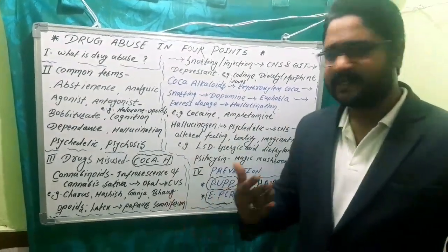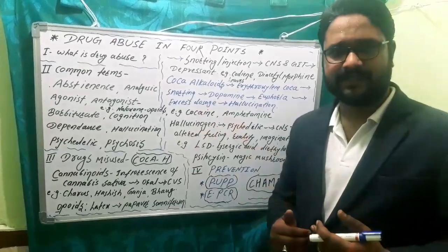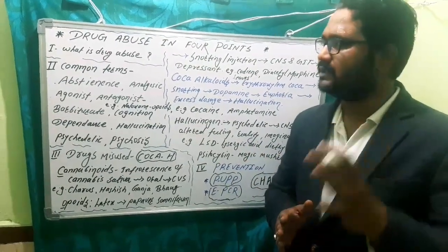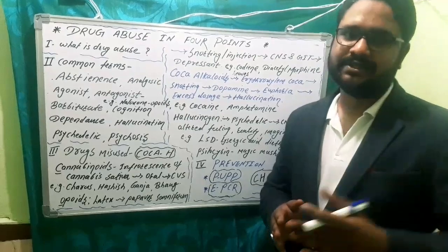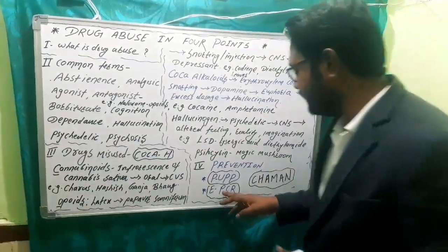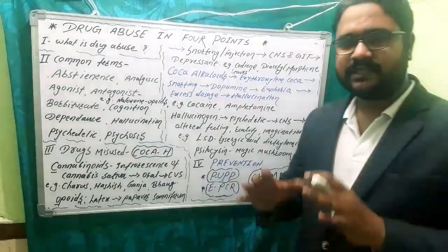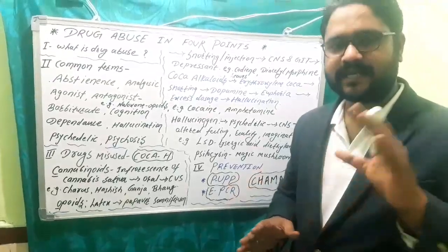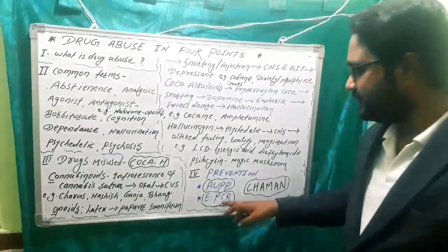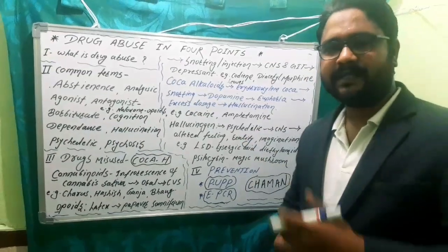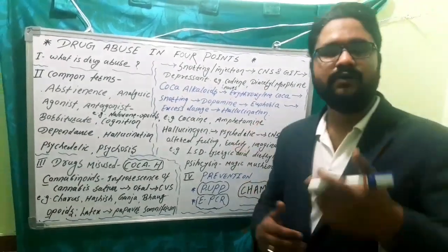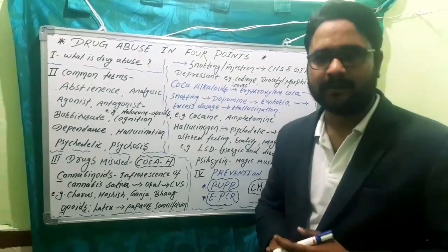E for education — that is why this topic is in our education system. Proper education about drugs and their consequences should be given to children at the right time. P for psychiatric help — if the situation worsens, one should seek a psychiatrist's help. C for counselling — family members, friends, or teachers can provide counselling, and someone we trust can make a real difference.